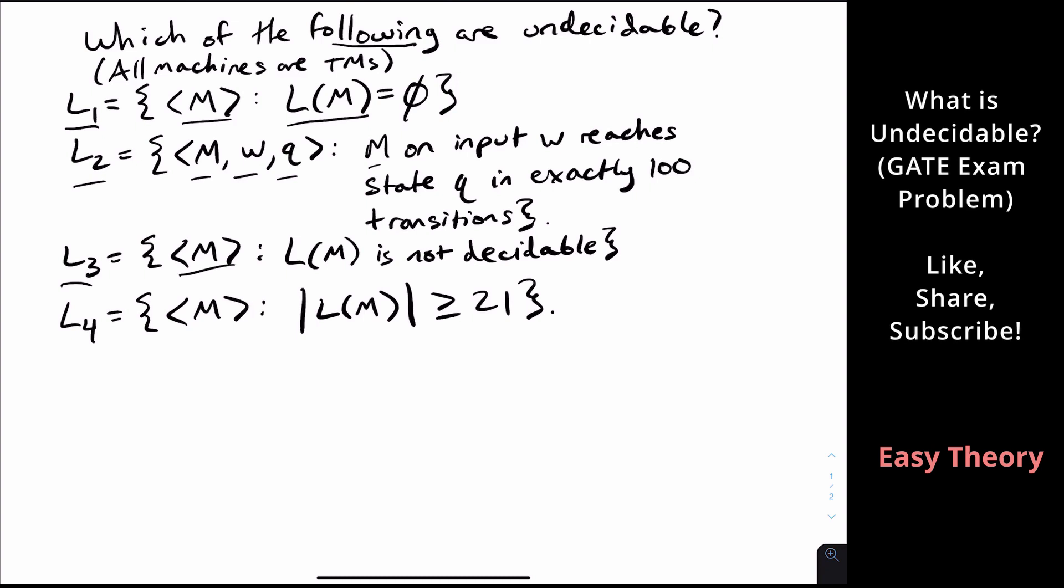L3 is the set of all Turing machines such that the language is not decidable, and L4 is the set of all Turing machines that accept at least 21 strings. So which of the following are undecidable?